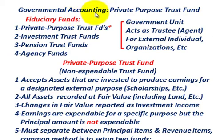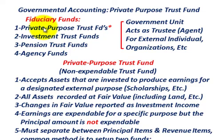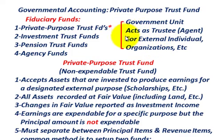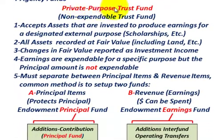We're going to be going over governmental accounting, specifically the private purpose trust fund. Trust funds fall under our fiduciary funds. We'd also have investment trust funds, pension trust funds, and agency funds as part of our fiduciary funds. With fiduciary funds, the governmental unit acts as a trustee or an agent for external individuals and organizations for administering these trust funds.